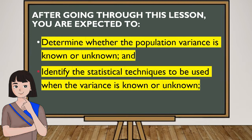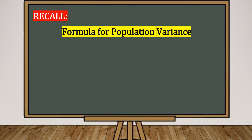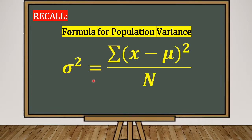Recall that the formula for population variance is given as the summation of the square of the difference between x and the population mean, divided by the capital N or the population size N. Take note that in order for us to solve for the population variance, we need the population mean, the elements of the population or the observation x, and of course the population size N.